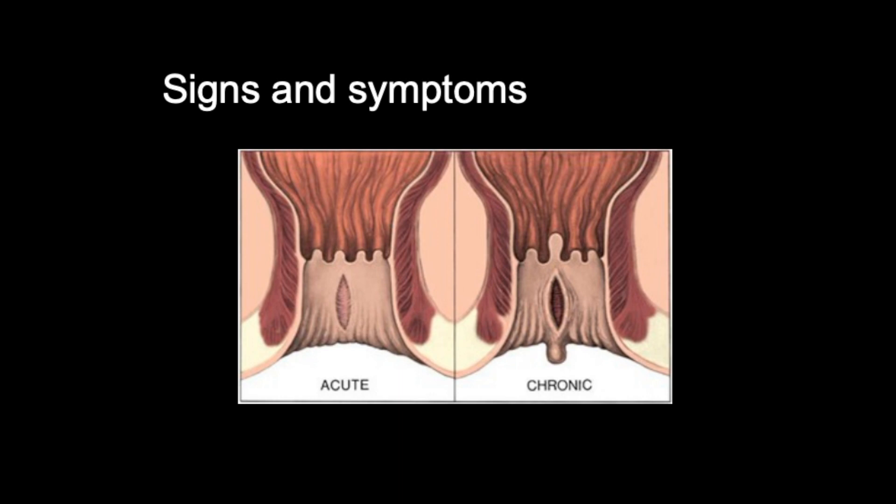Starting with acute anal fissure, an acute anal fissure is usually superficial as you can see in this diagram here, with well demarcated borders. On the other hand, a chronic anal fissure is typically wider and deeper. You may see the muscle fibers that are visible at the base. The edges can often be swollen and you may see a skin tag which can be visible at the end of the fissure, typically in this area here.